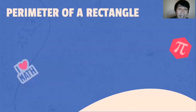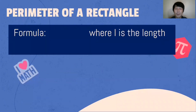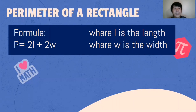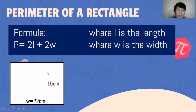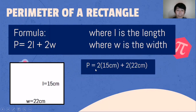Moving on to the perimeter of a rectangle. The formula is: P = 2 × L + 2 × W, where L is the length and W is the width. For example, the length is 15 centimeters and the width is 22 centimeters. We substitute: 2 multiplied by 15 centimeters, and 2 multiplied by 22 centimeters.